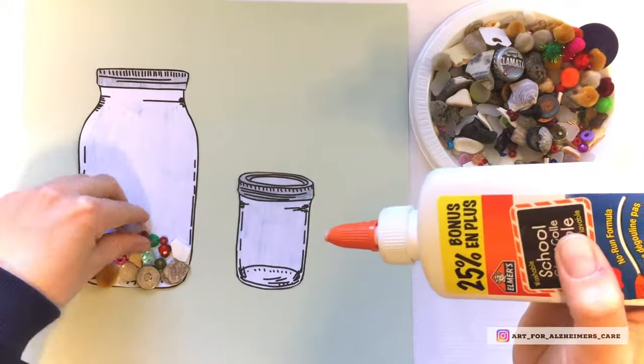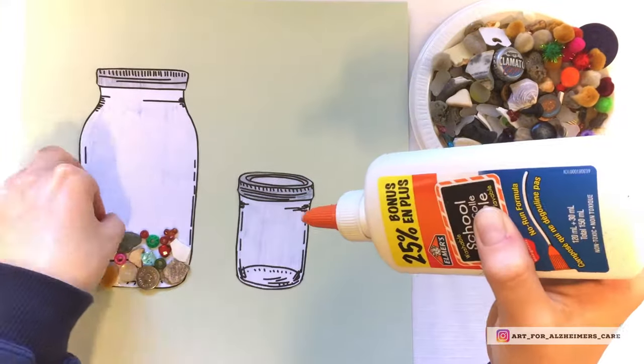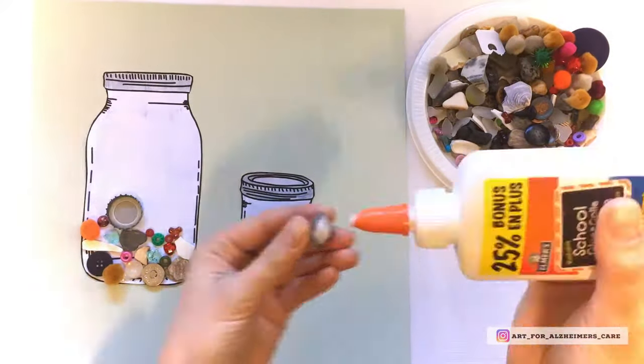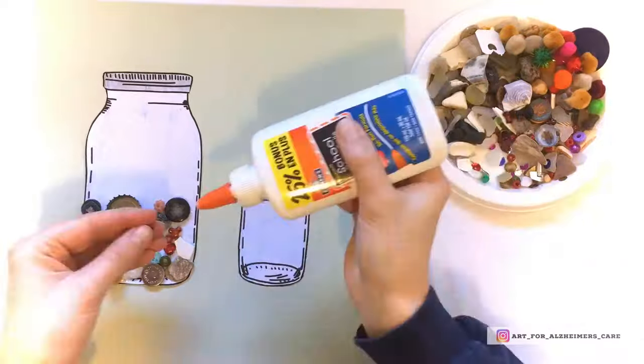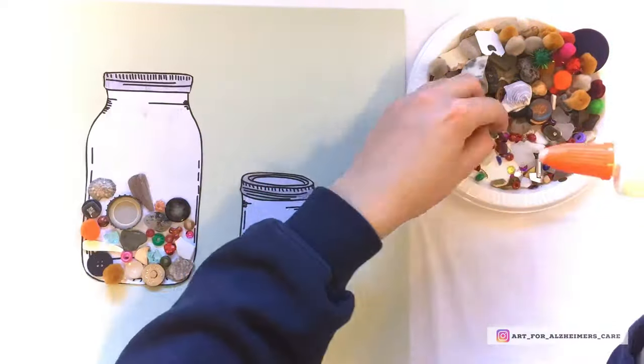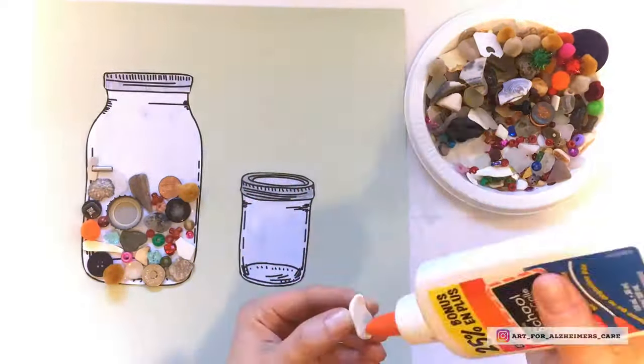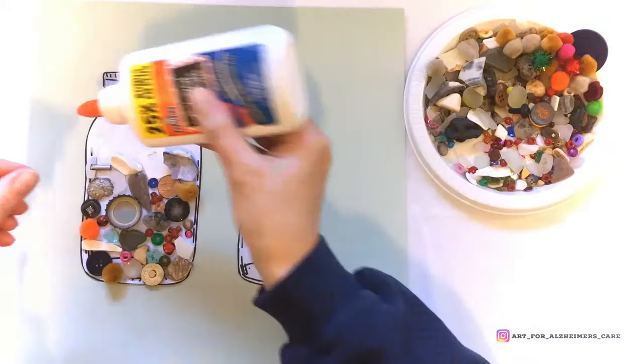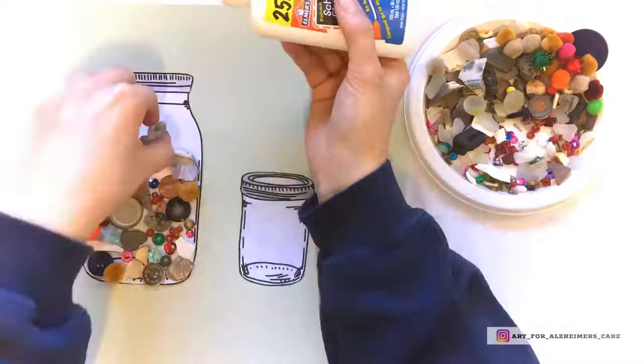So there's different ways that you can glue the items onto the paper. I started out by putting dabs of glue onto the items themselves and then sticking them onto the jar. Some people prefer to do it this way and then other people prefer to put the glue down onto the paper first and then add the items on top.